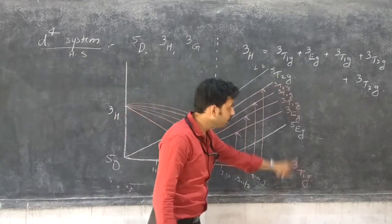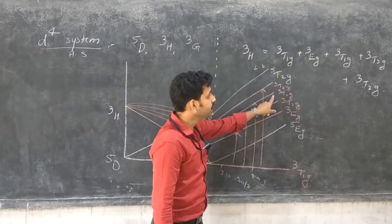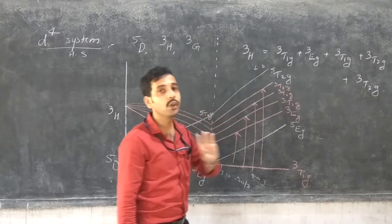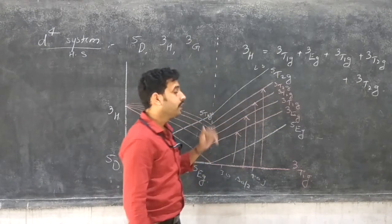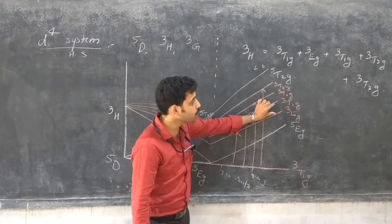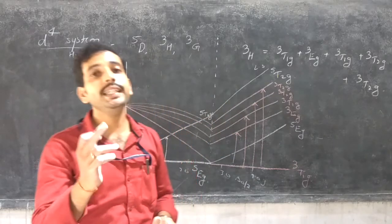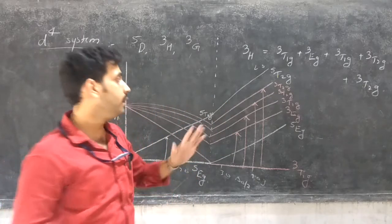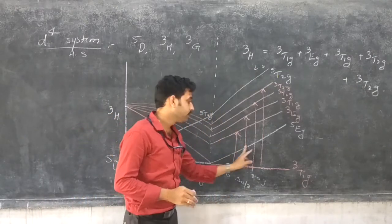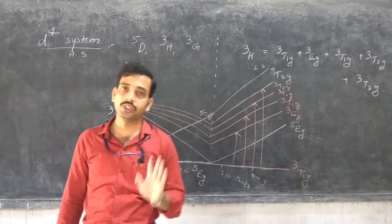The 1st transitional line is due to 3T1G to 3EG, and the 2nd is due to 3T1G to 3T2G. Here, 3EG and 3T1G are overlapping, but we can differentiate the transitional lines. These 2 are near to one energy and overlap as a single transitional line, but from the Tanabe-Sugano diagram, 4 transitional lines are observed in the low spin D4 systems.